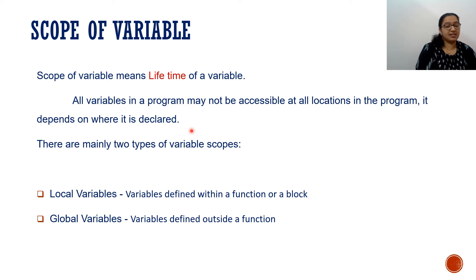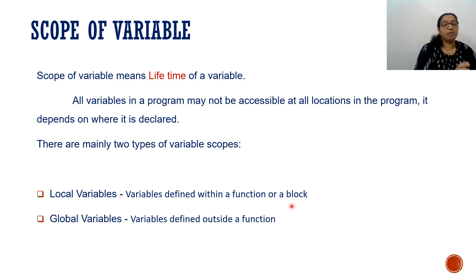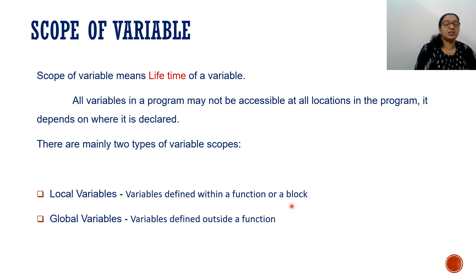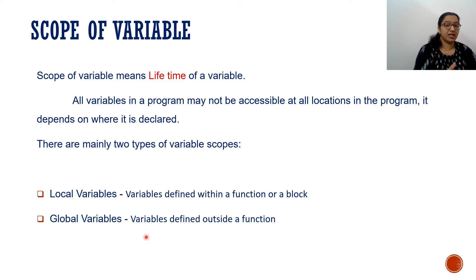There are mainly two types of variable scope: one is local variables and the other is global variables. Local variables are the variables defined within a function or a block. If you are declaring a variable inside a function, that variable's lifetime is only within that function. If you declare it within a block, its lifetime is only within that block. Global variables, on the other hand, are defined outside a function.